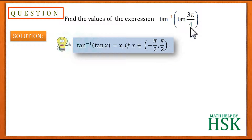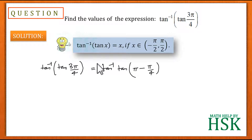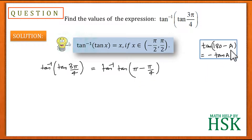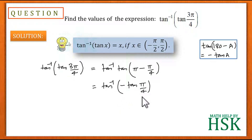To simplify, I write tan⁻¹(tan(3π/4)) = tan⁻¹(tan(π - π/4)). You can see that π - π/4 = 3π/4. Now, we know that tan(180° - θ) = -tan θ, so I can write this as tan⁻¹(-tan(π/4)).